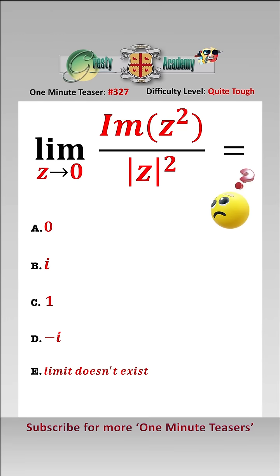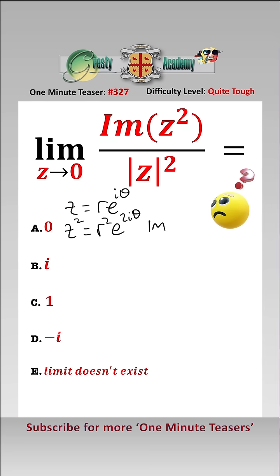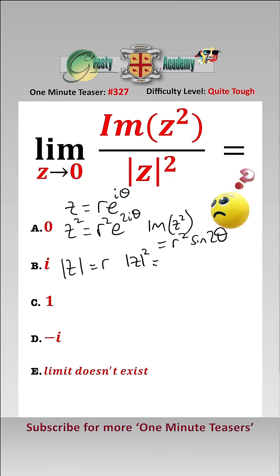The easiest way to solve this is to put z in polar form: z equals r e to the i theta. Therefore z squared is equal to r squared e to the 2i theta, and the imaginary part of z squared is equal to r squared sine 2 theta. The modulus of z is equal to r, so the modulus of z squared is equal to r squared.